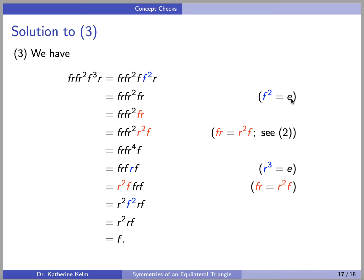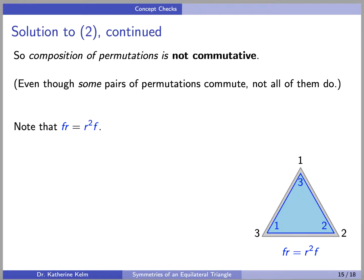So that does nothing, it just sends one to itself, two to itself, three to itself. So we can see here that we have F cubed, which is F times or composed with F squared and F squared is the identity. So we can get rid of F squared in our expression. We also see that FR is equal to R squared F. We discovered this in the last question.